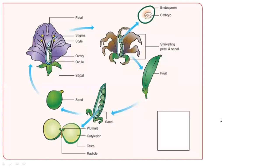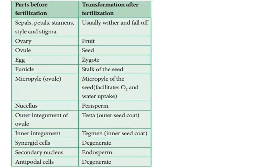Now let's look at a very important thing — parts of the flower before and after fertilization. Sepals, petals, stamens, style, and stigma — the petals, sepals, stamens, style, and sigma fall off after fertilization. The fruit develops, producing seeds from the egg, going through zygote. The funicle connects the seed; the micropile is present. Oxygen, carbon dioxide, and water pass through the micropile. The outer integument of the ovule becomes the testa; under the testa is the tegman.